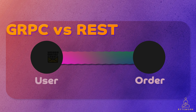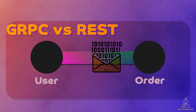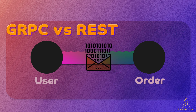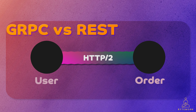gRPC uses the binary protocol buffer format for data serialization, which is much more compact and efficient than text-based formats like JSON used by REST. This results in smaller payload sizes and faster data transmission, leading to improved network efficiency and reduced bandwidth usage. gRPC also leverages the HTTP/2 protocol out of the box, which supports multiplexing, request-response streaming, and header compression. These features enable concurrent requests, efficient streaming of data, and reduced latency, making gRPC a high-performance communication framework.